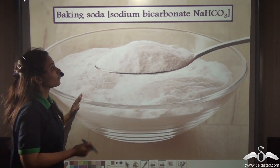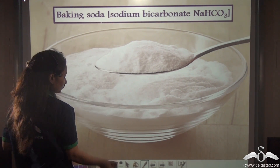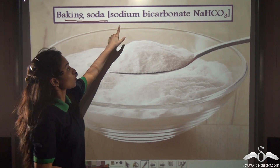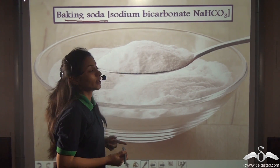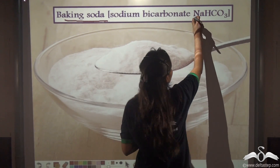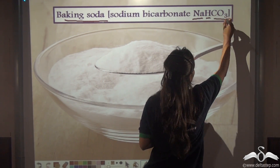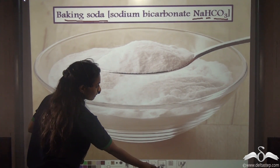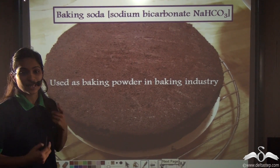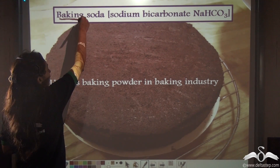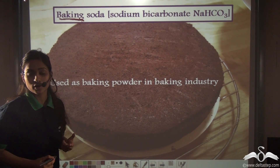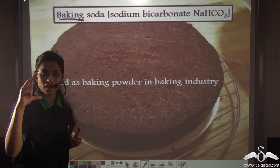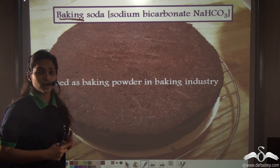We have another salt which is baking soda, chemically known as sodium bicarbonate or sodium hydrogen carbonate. As the name suggests — baking — it is used as baking powder in the baking industry. You have seen cakes puffing up; this is because of baking soda.